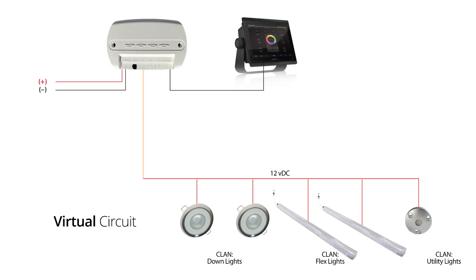However, lights that are compatible with the POCO system, meaning they have Lumitech's proprietary PLI technology built in, can be placed on the same physical circuit, yet receive separate commands from the POCO module and behave differently. The down lights clan can be red, for example, while the flex light clan is blue and the utility lights clan is green. This also applies to light intensity.